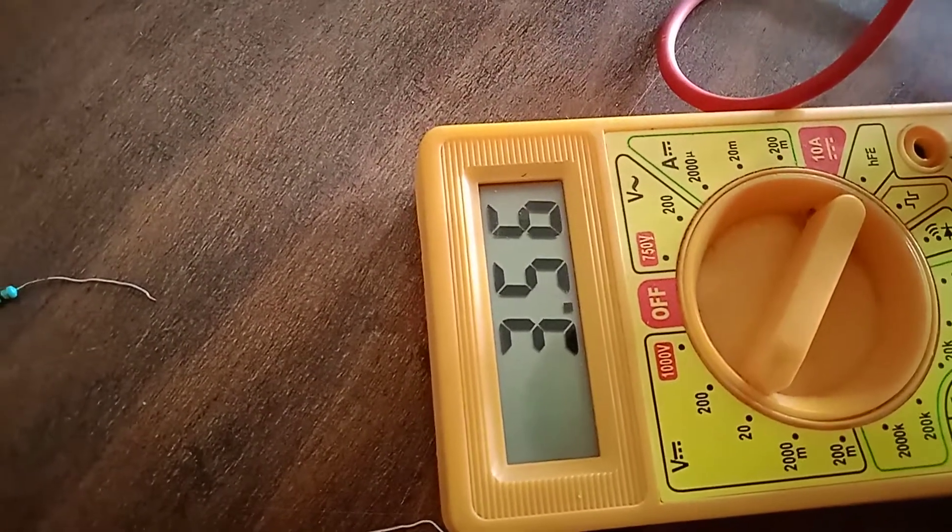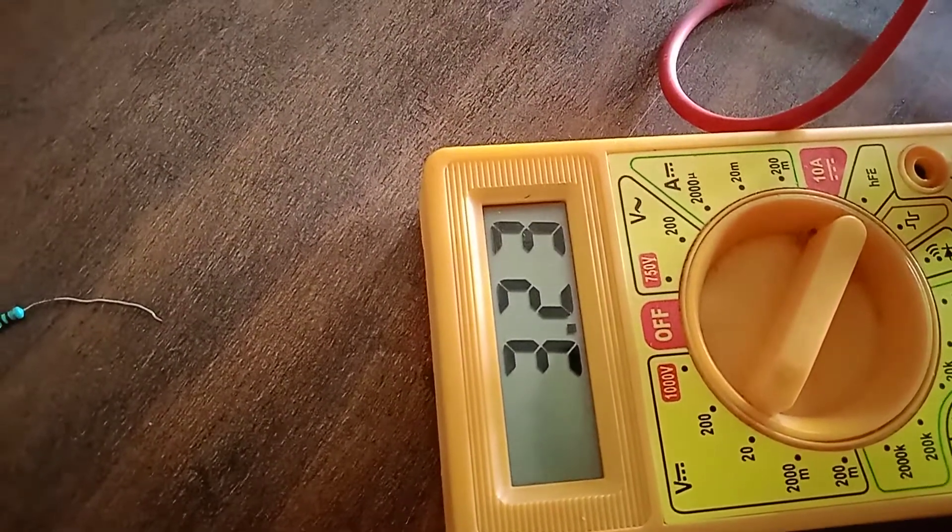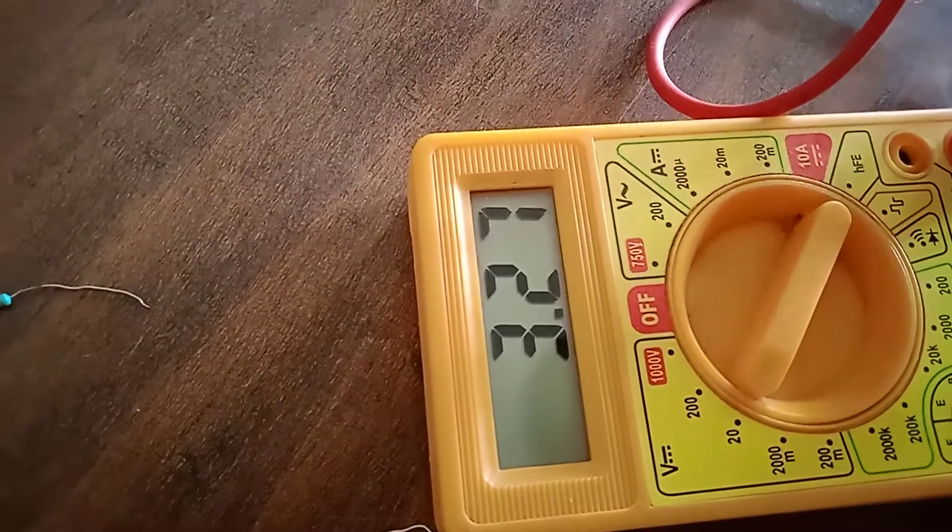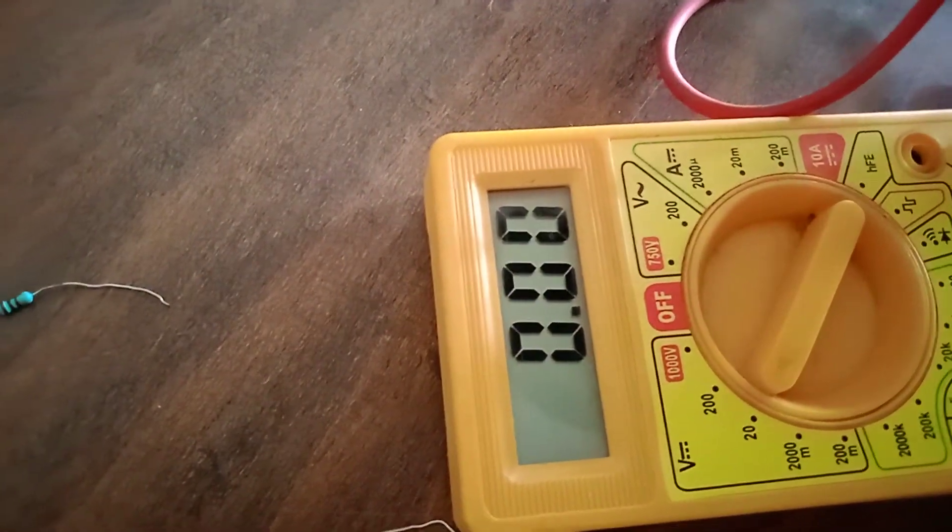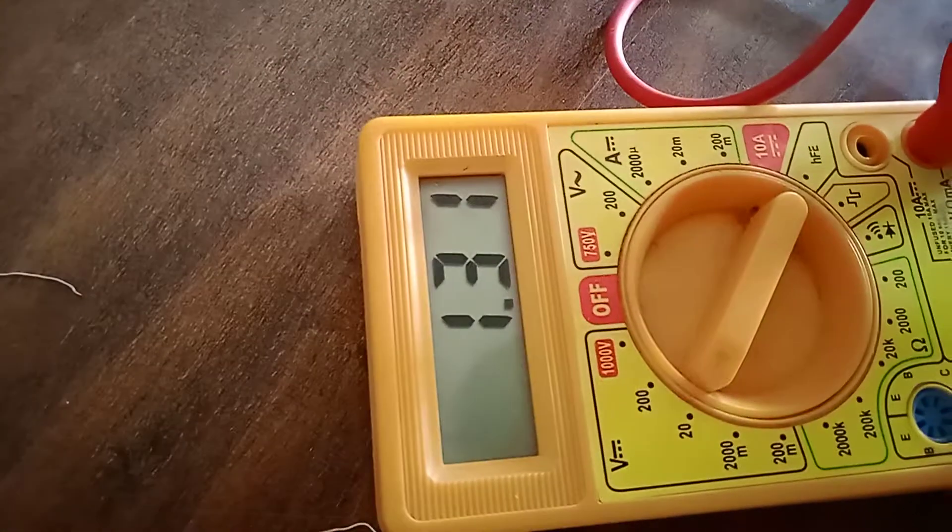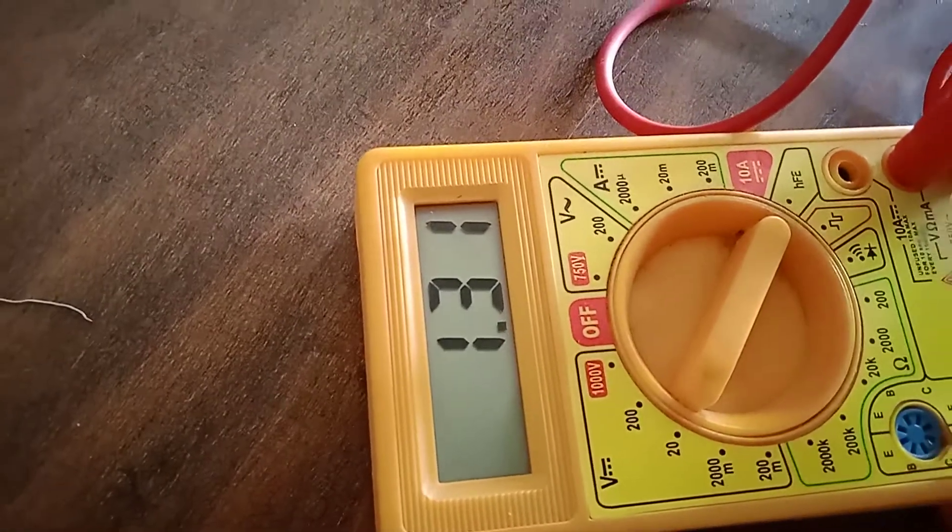Now the theoretical value is 2.7 something. So this is our 3.2, it means near about the same. And VB value is 1.3. So near about the same. Practical value, theoretical value.